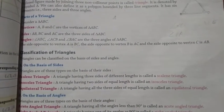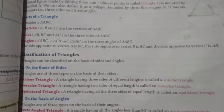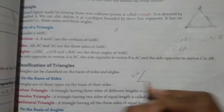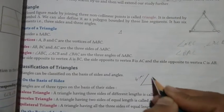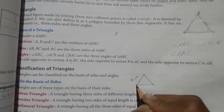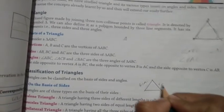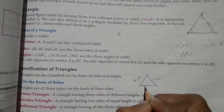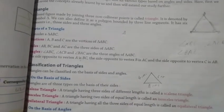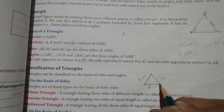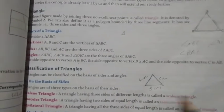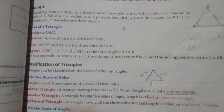A scalene triangle has three sides of different lengths. For example, suppose the sides are four centimeters, six centimeters, and three centimeters. Since all the lengths are different, this is a scalene triangle.